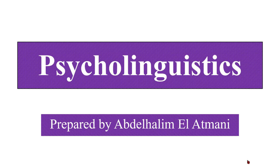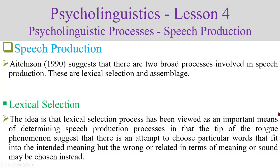Hello dear student, welcome to another lesson in psycholinguistics. This is the fourth lesson, which will be about speech production. Eckison (1990) suggests that there are two broad processes involved in speech production: lexical selection and assemblage. Concerning lexical selection, the idea is that the lexical selection process has been viewed as an important means of determining speech production.